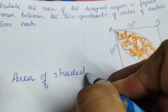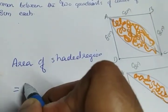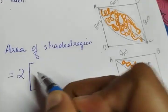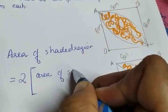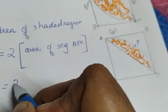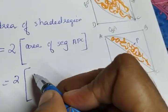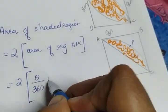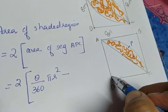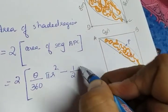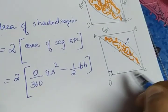Area of the shaded region equals 2 times the area of segment APC. Applying the formula: area of segment = area of sector minus area of triangle, that is (theta/360) × π R² minus area of triangle. Since it is a right triangle with angle 90°, we apply the formula (1/2) × B × H, where B is DC and height is AD.